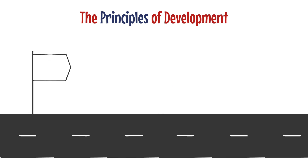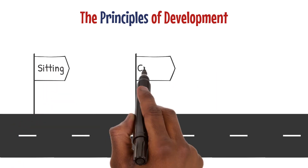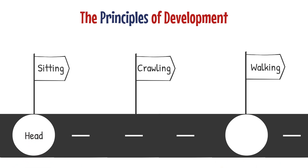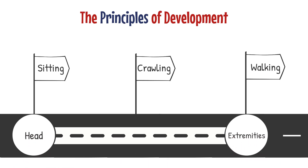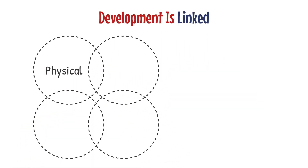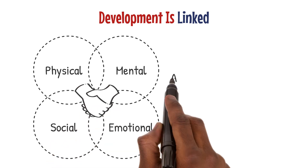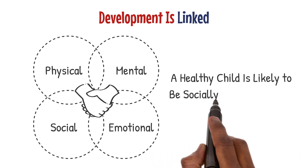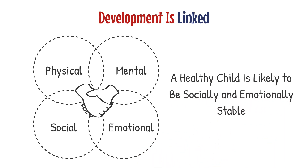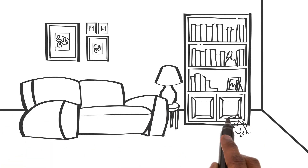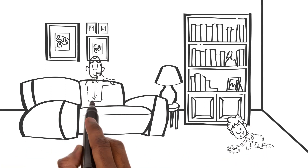Moving on, we delve into the principles of development. Development follows a pattern and sequence — it happens in a cephalocaudal and proximodistal sequence, starting from the head and moving towards the extremities. Development is also linked: physical, mental, social, and emotional development are all interconnected. A healthy child is likely to be socially and emotionally stable.